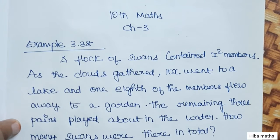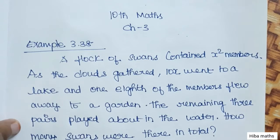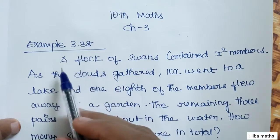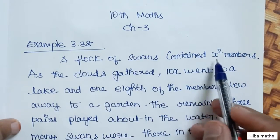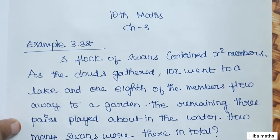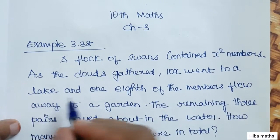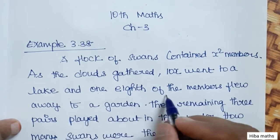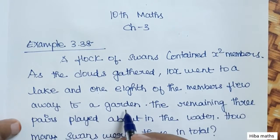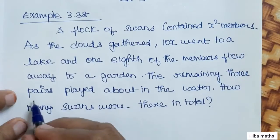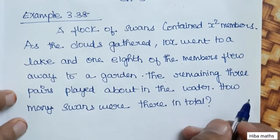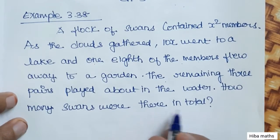Hello students, welcome to Hiba maths. 10 Standard Maths Chapter 3 Example 3.38. A flock of swans containing x² members. As the clouds gathered, 10x went to a lake and one-eighth of the members flew away to the garden. The remaining three pairs played about in the water. How many swans were there in total?